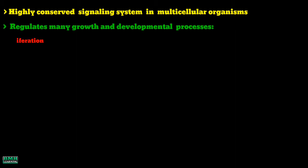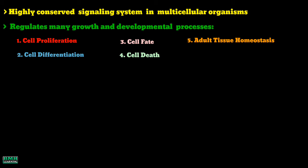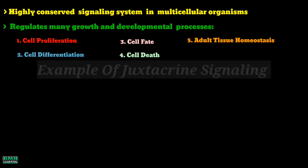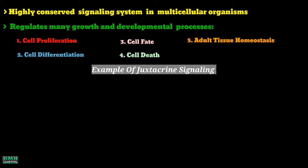It's a highly conserved cell signaling system present in most multicellular organisms. This pathway regulates a number of growth and developmental processes such as cell proliferation, cell differentiation, cell fate, cell death, and also maintains adult tissue homeostasis. Specifically, it's an example of juxtacrine signaling.